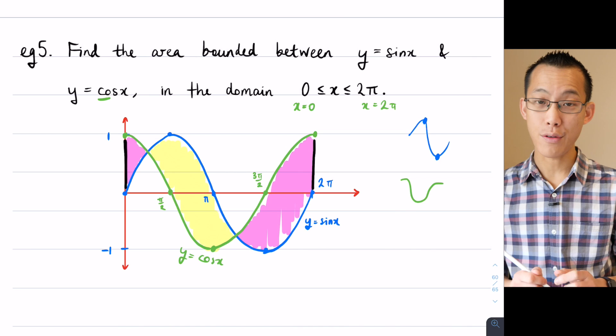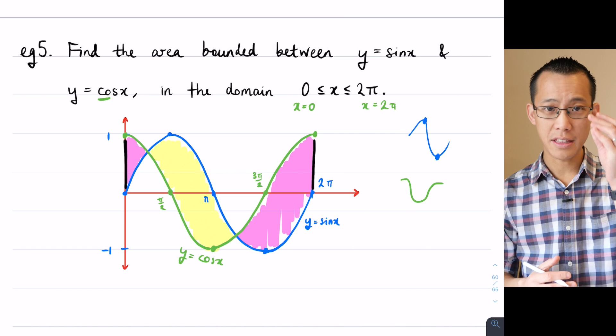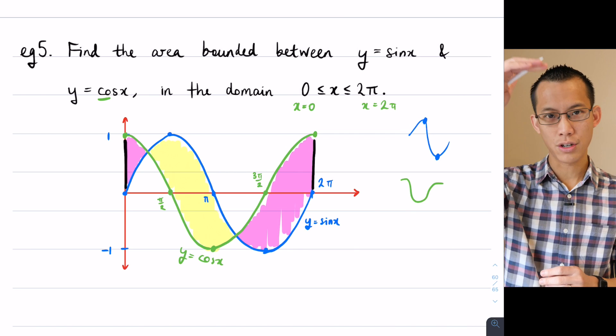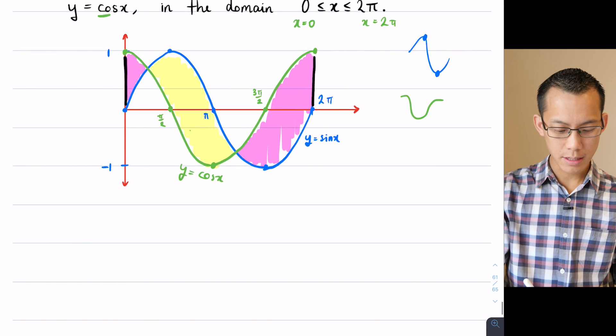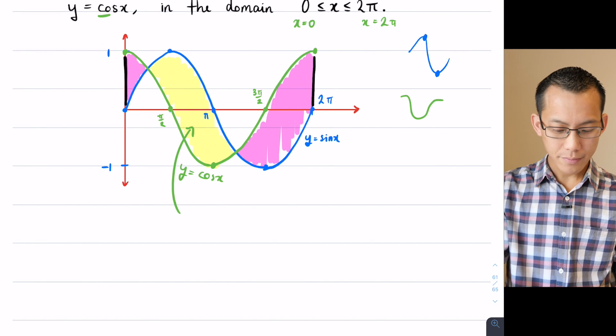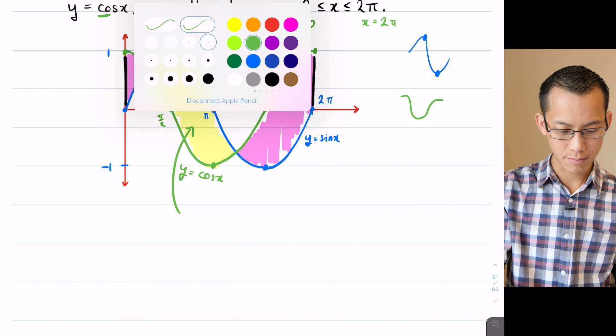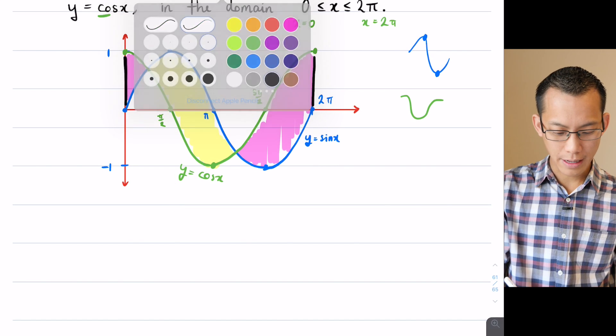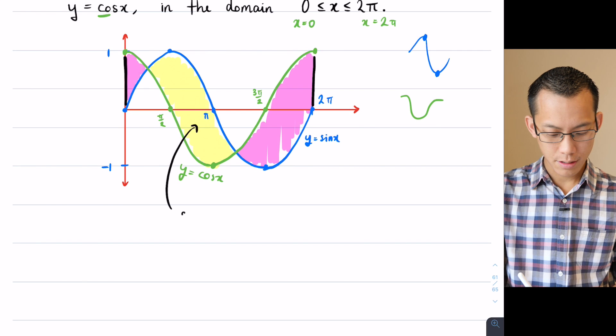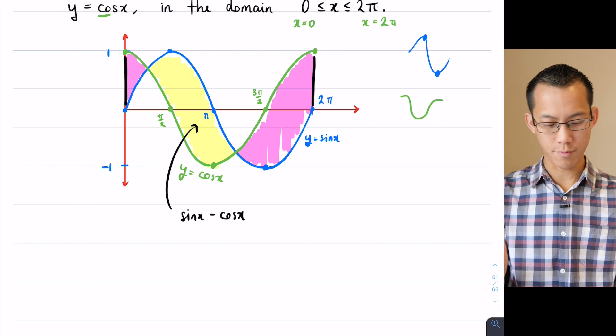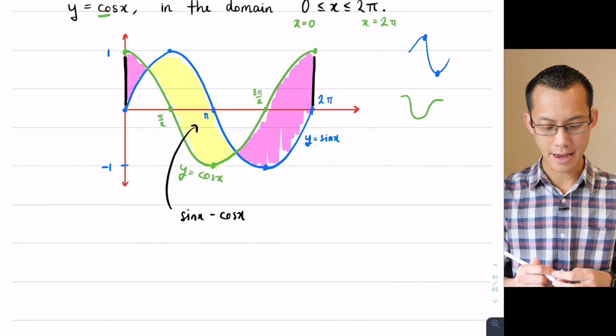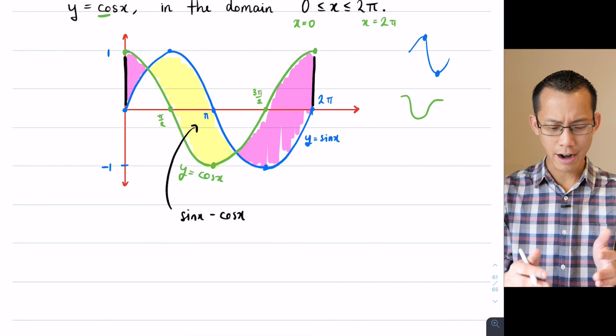You've got y equals sine x which is the blue graph and then you've got y equals cos x which is the green graph. So in order to work out the area between two curves I need to work out top take away bottom, this is blue take away green, so in order to do this area in here I'm going to have to work out sine x take away cos x and I'm going to have to integrate from some boundary to some other boundary to find that. So that's the yellow area.